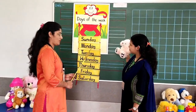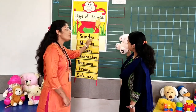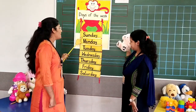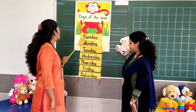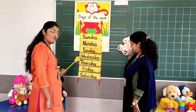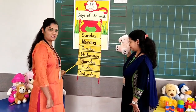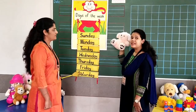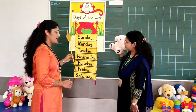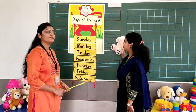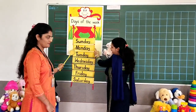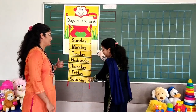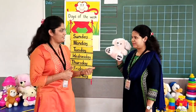Bunny, repeat after me. Days of the week: Sunday, Monday, Tuesday, Wednesday, Thursday, Friday, Saturday. Will you tell the days of the week once again? Yes! Sunday, Monday, Tuesday, Wednesday, Thursday, Friday, Saturday. Excellent Bunny! Wow, you are a genius. Thank you!